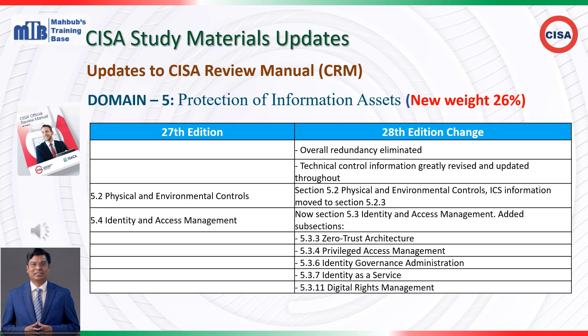Identity and Access Management, previously Section 5.4, is now Section 5.3. This section has been expanded with several new subsections covering Zero Trust Architecture (5.3.3.3), Privileged Access Management (5.3.4), Identity Governance Administration (5.3.6), Identity as a Service (5.3.7), and Digital Rights Management (5.3.11).